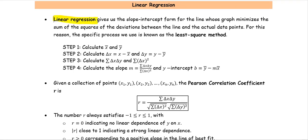Linear regression gives us the slope-intercept form for the line whose graph minimizes the sum of the squares of the deviations between the line and the actual data points. For this reason, the specific process we use is known as the least square method.